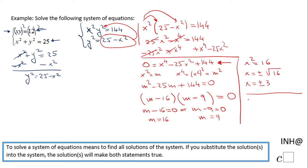Also we have m equals 9, which is going to give us x squared equals 9, or x equals plus or minus square root of 9, which is plus or minus 3.